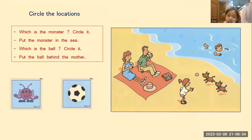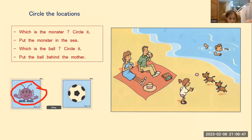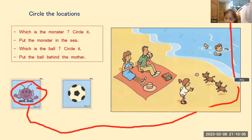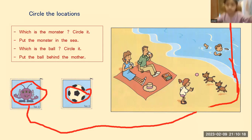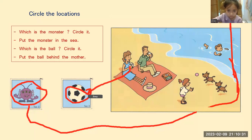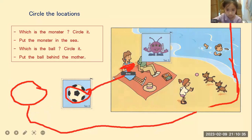So now, Zoe, where is the monster? Can you please circle the monster? Yes, very good. Now put the monster in the sea. Yes, very good. Now put the monster in the sea. Here is the ball. Please circle it. Great job. Put the ball behind the mother. Great job. Very good, Zoe. That's correct.